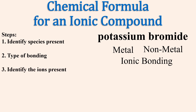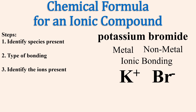Next, identify the ions present with their elemental symbols and charges. Potassium is a cation and carries a plus one charge. Bromide is an anion and carries a minus one charge.